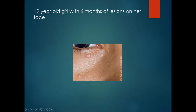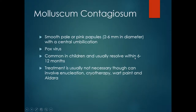This 12 year old girl has six months of lesions on her face. The lesions are flesh-coloured and papular with a central umbilication, which is typical of molluscum contagiosum.